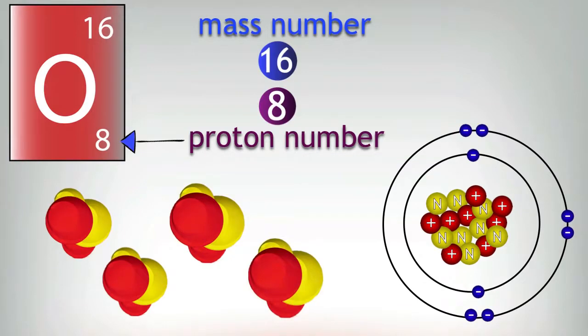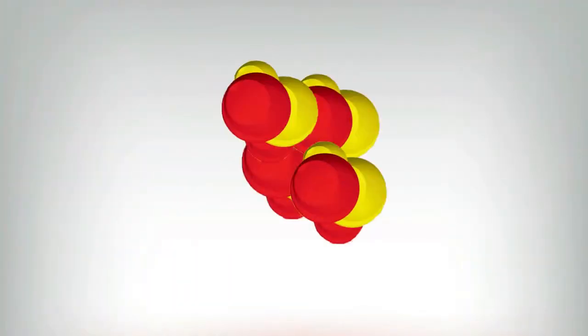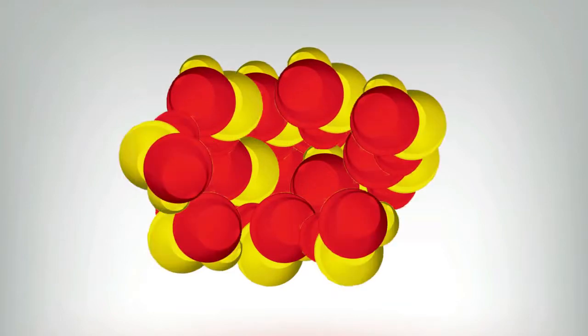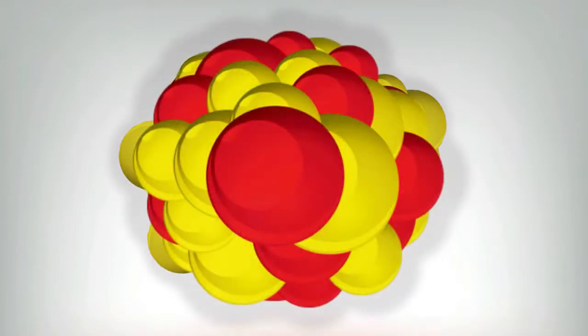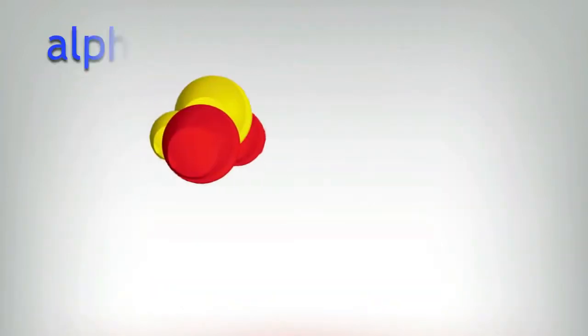This is because the easiest way to build a bigger and bigger nucleus is to add two protons and two neutrons at the same time, just like this block here. So if you've got a really big nucleus that's so big that it starts to become wobbly or unstable, and bang, out comes two protons and two neutrons together in an alpha particle.